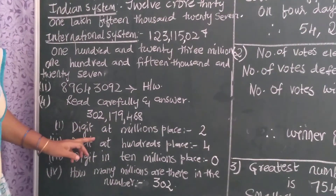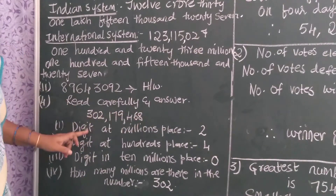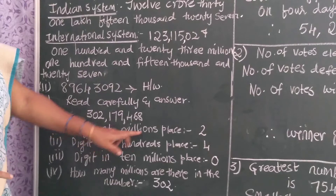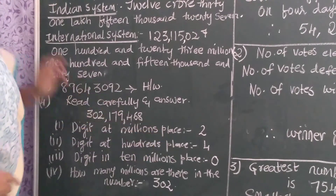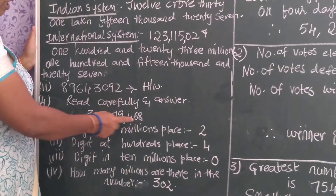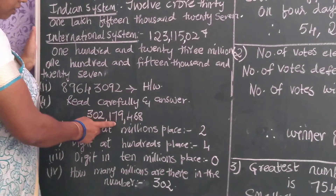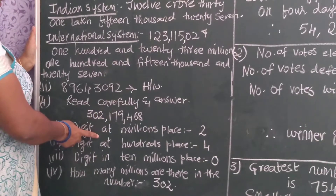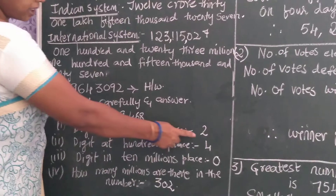Therefore, what they have asked you seeing this number — the first question they ask is digit at millions place. I have read the place values: hundreds, thousands, ten thousands, hundred thousands, millions. So what should I write? Digit at millions place is two.